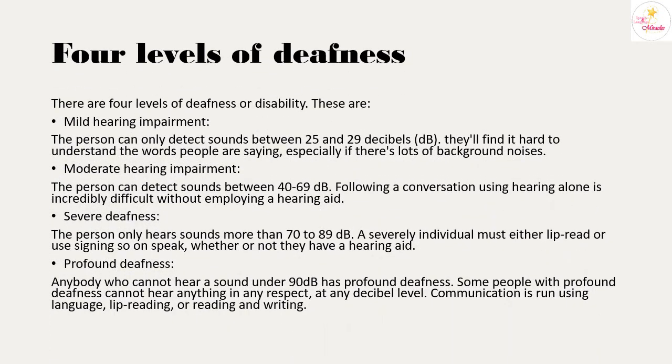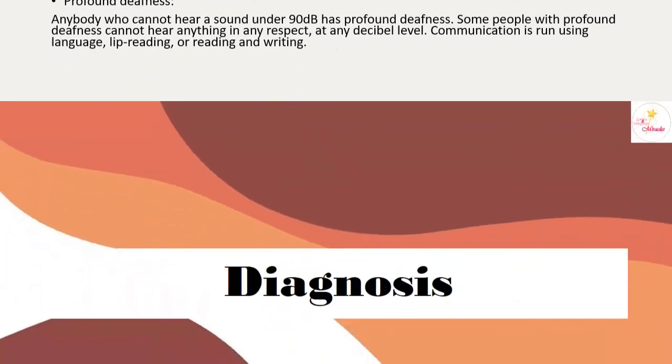There are four levels of deafness. Mild: the person can only detect sounds between 25 and 29 decibels and may struggle to understand words with background noise. Moderate: sounds between 40 to 69 dB; following a conversation without a hearing aid is very difficult. Severe: the person only hears sounds above 70 to 89 dB and must lip read or use signing even with a hearing aid. Profound: anyone who cannot hear sounds under 90 dB; some cannot hear anything at any decibel level and rely on sign language, lip reading, or reading and writing.